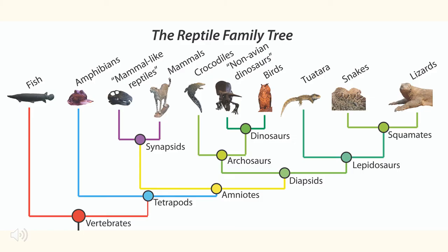This shows the reptile family tree, which illustrates how all these groups have scales in different ways. It shows how fish first came from vertebrates, then went to tetrapods, amniotes, diapsids, lepidosaurs, and finally squamates, which include snakes and lizards as the most closely related group.